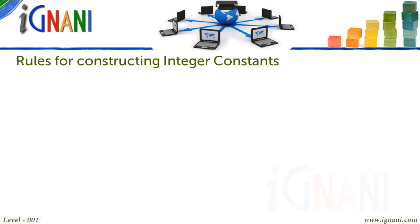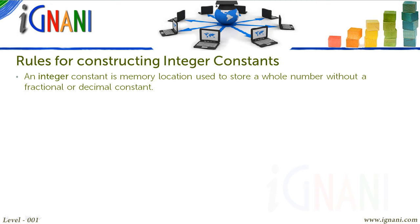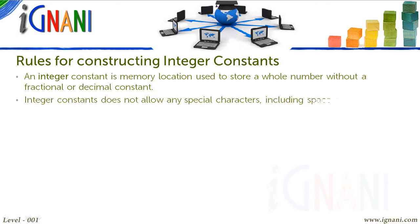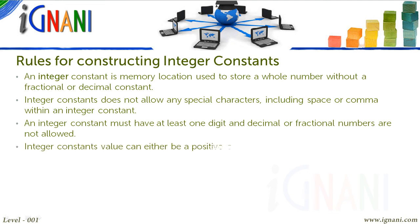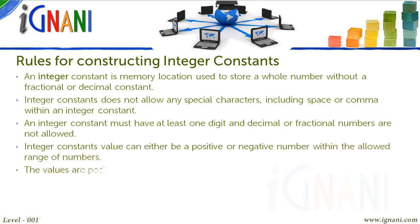Rules for constructing integer constants: An integer constant is a memory location used to store a whole number without a fractional or decimal value. Integer constants do not allow any special characters, including space or comma, within an integer constant. An integer constant must have at least one digit, and decimal or fractional numbers are not allowed. Integer constants' value can either be positive or negative within the allowed range. Unless a sign is specified, the values are positive by default.